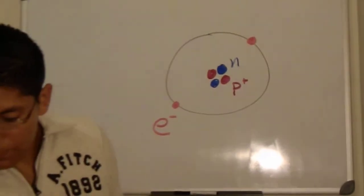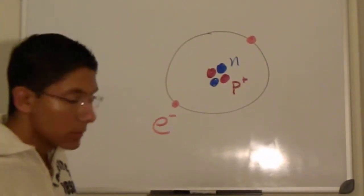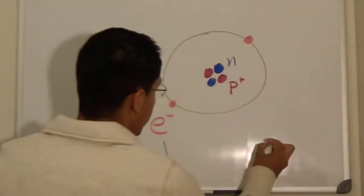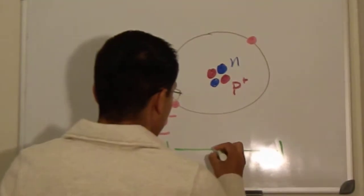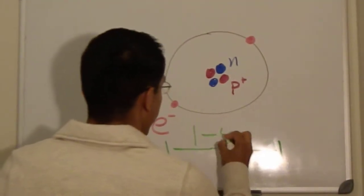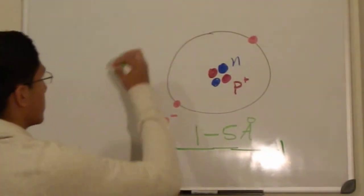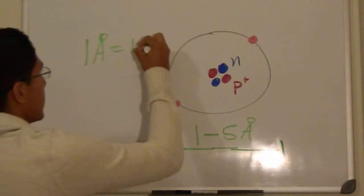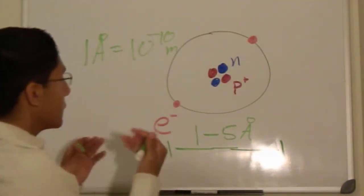Now for you to get an idea of how big this is, let me draw in some dimensions. From here to here is normally about 1 to 5 angstroms. Now just one angstrom is equal to 10 to the negative 10 meters.